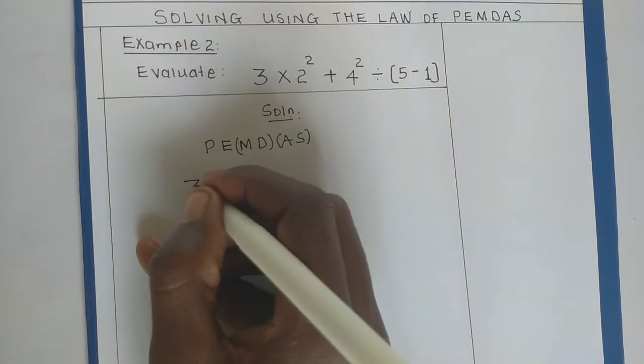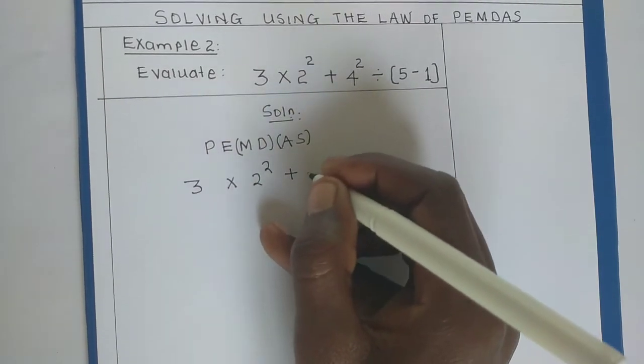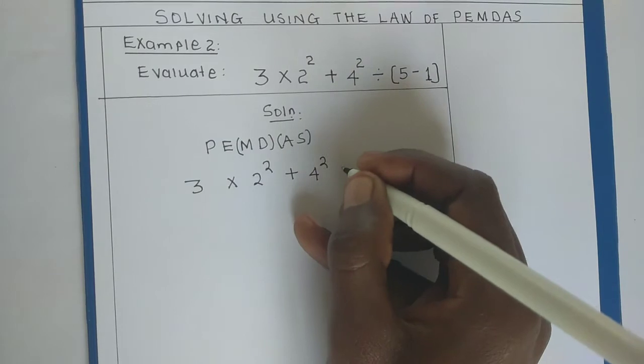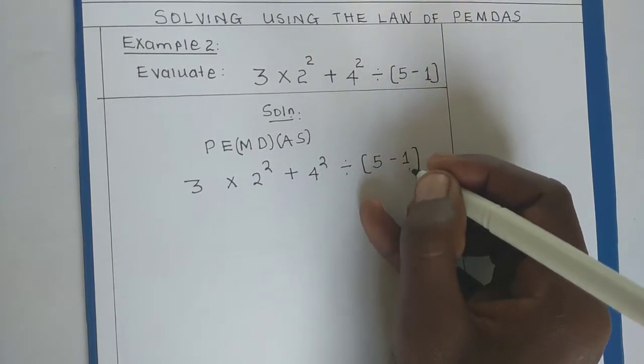We are going to say 3 times 2 to the power of 2 plus 4 squared. We are dividing it by 5 minus 1.